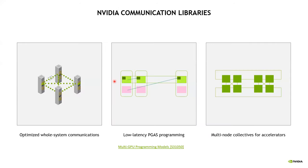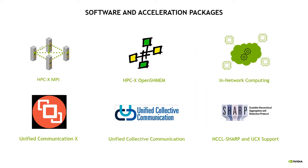Jumping to the communication libraries, just like with the math libraries, we hope to provide you with the right set of communication libraries optimized for the entire system — low-latency PGAS programming, which is partitioned global address space, through things like NVSHMEM, and optimized collectives on your system. We have several libraries provided within the HPC SDK: HPCX provides a version of OpenMPI, we also have support for OpenSHMEM, and UCX and SHARP, which are technologies that came from Mellanox.